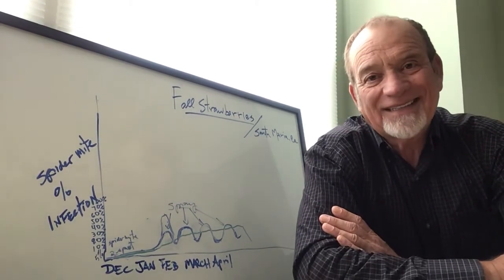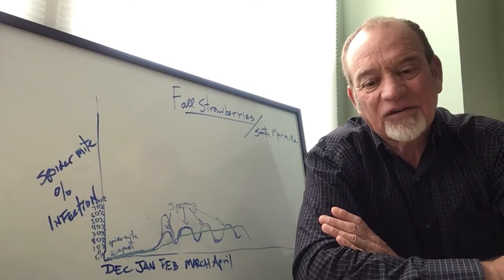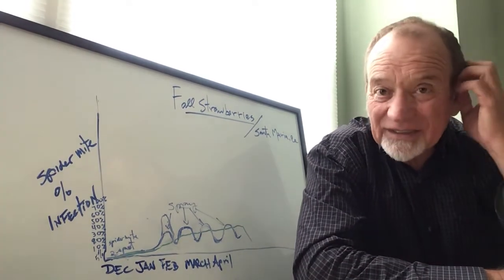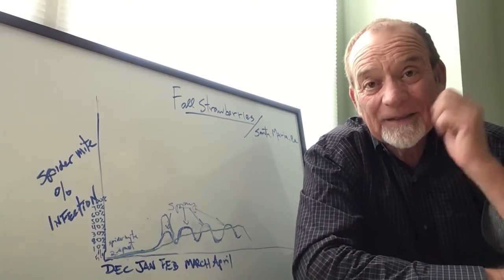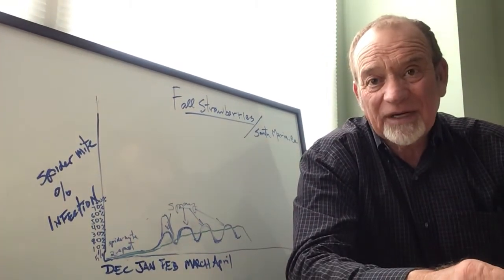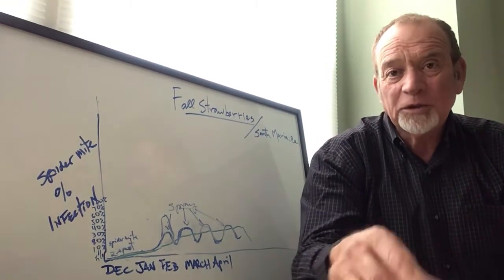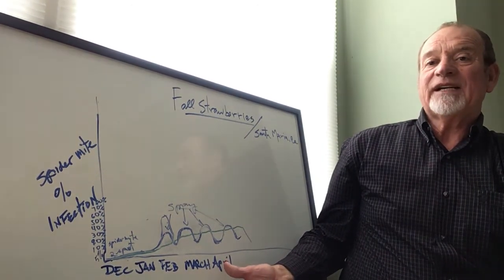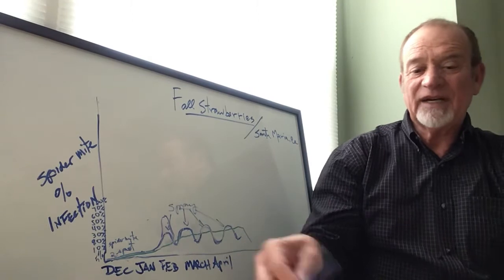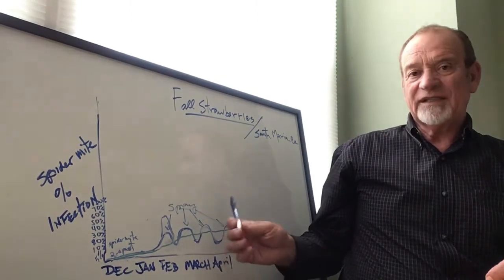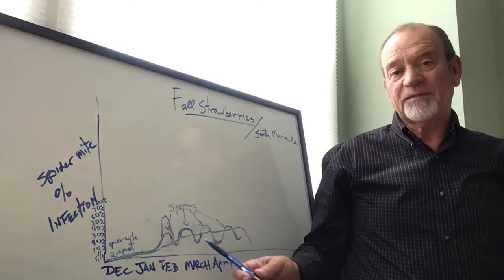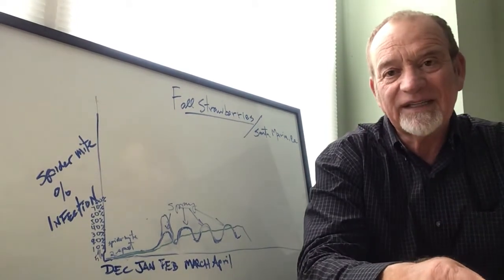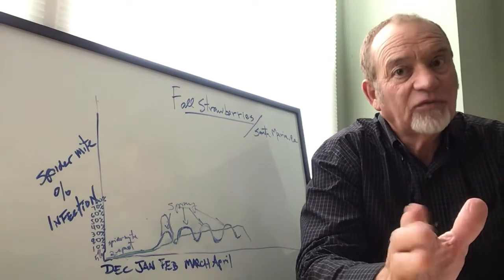Going into April, if we didn't finish the two-spot, we're going into lygus season. For conventional we don't have a lot of lygus materials that are effective, and we have a long season to go. So I'd rather be done with two-spot early. By the end of March, first-second-third week of April, be done with four sprays, two sprays, or three sprays. But whatever it takes, no more spider mites by the middle of April would be very important.